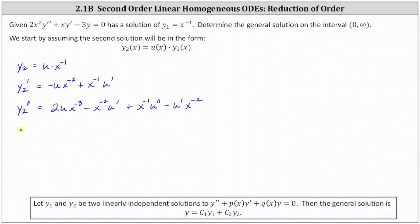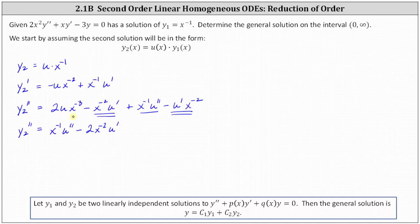Let's simplify y2 double prime. We have one u double prime term: x to the power of negative one times u double prime. We have two u prime terms, which gives us minus two x to the power of negative two times u prime. And then plus two x to the power of negative three times u.